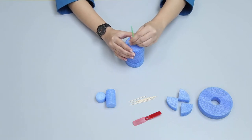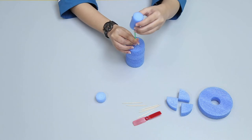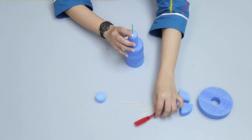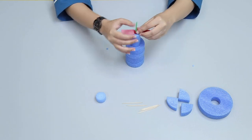First, slide the foam cylinder, propeller, and then small foam wheel onto the stick.